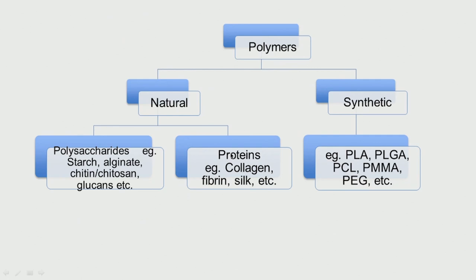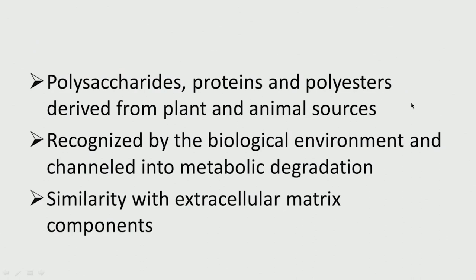Proteins have the peptide bond — that means the amide bond, C double bond O–N — like collagen, fibrin, silk; they are all called proteins. So they have the amide bond in their system. Natural polymers are polysaccharide-based or protein-based. Because the body contains a lot of proteins and sugars, many of the degradation cycles in the body use these, so they nicely get absorbed and degraded in various cycles in the human system.